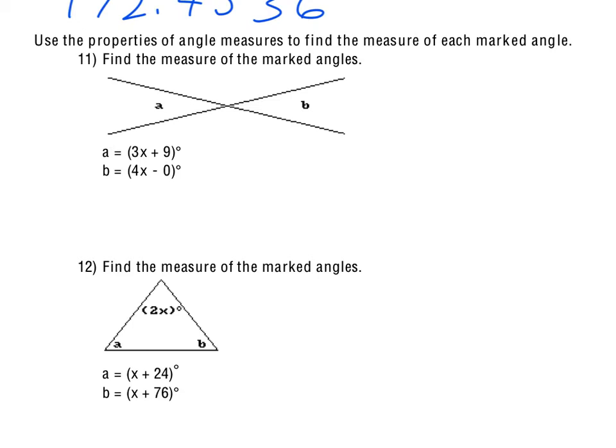For number 11, these angles are vertical angles, so we set the 3x plus 9 equal to the 4x minus 0, so really 3x plus 9 equals the 4x. Subtract the 3x from both sides, we get 9 equals x. However, we're not done there, they want us to find the measure of the marked angles. So we know x is 9, so the 4 times 9 for B, that'll be 36 degrees, and then so the other side, 27 plus 9, would also have to be 36 degrees, because they have to be the same.